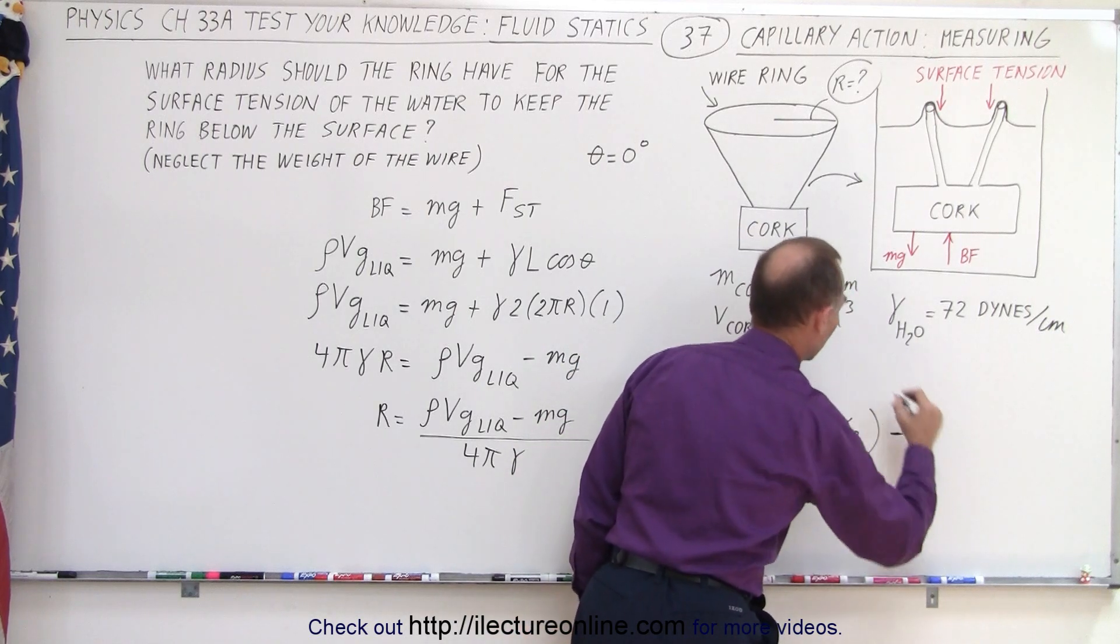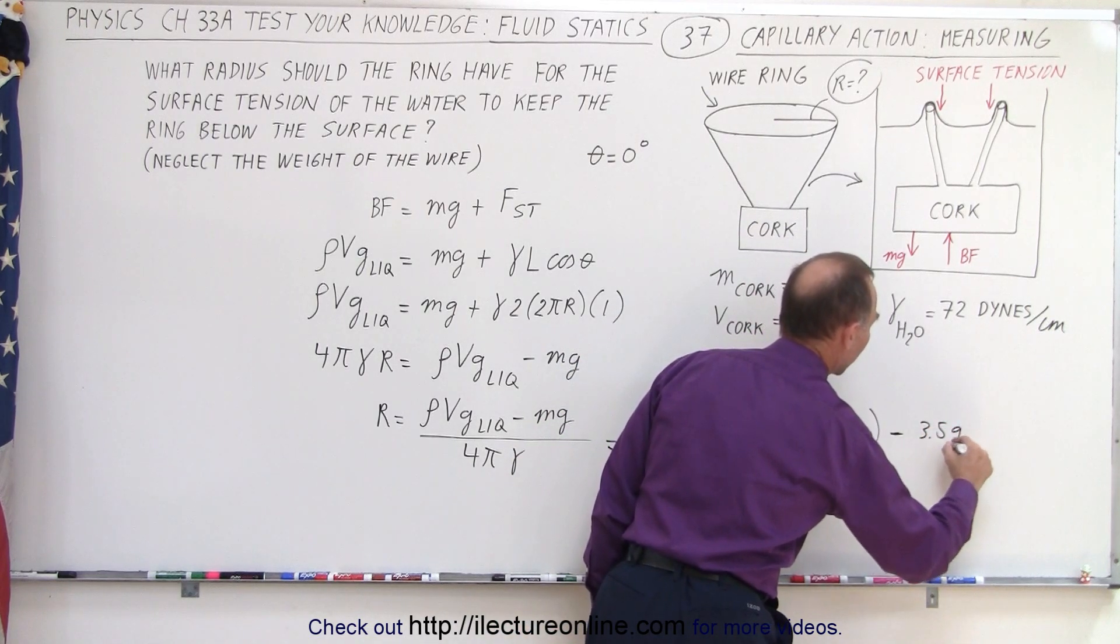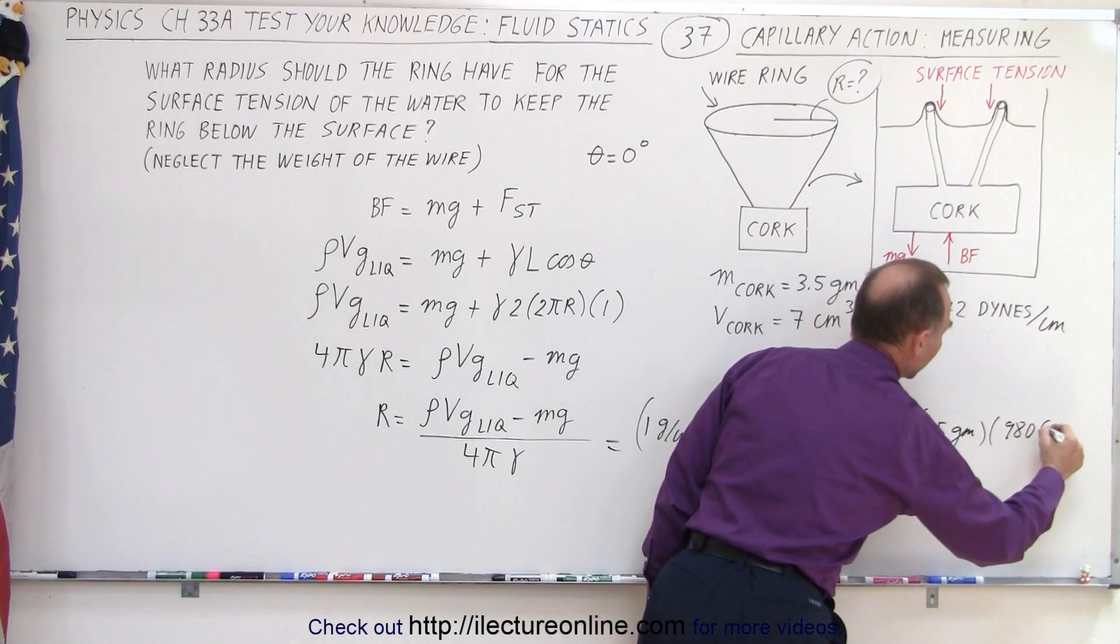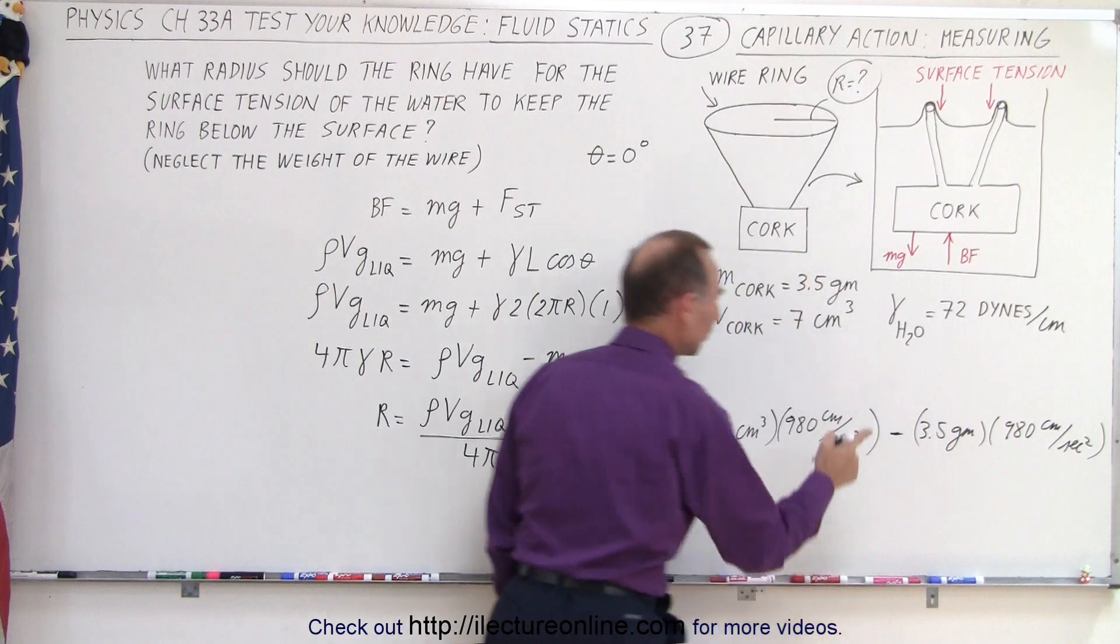We subtract from that the weight, which is minus the mass, which is 3.5 grams times g, which is 980 centimeters per second squared. So that's the weight of the cork.